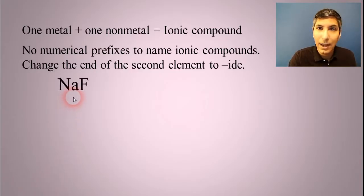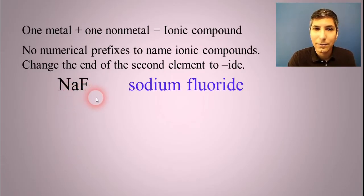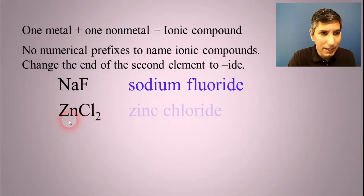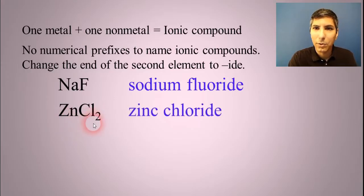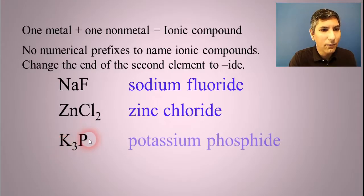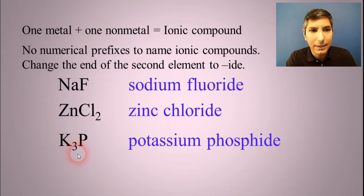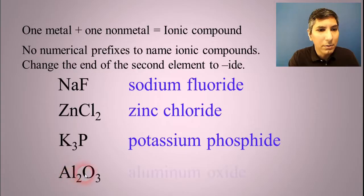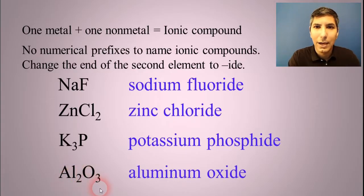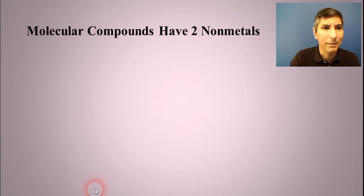...then name the second element and change the ending of the second element to IDE. So for example, if we were to have NaF, that's just sodium fluoride or ZnCl2, it's just zinc chloride. As long as it's straightforward like this, these binary compounds are fairly simple to name. K3P, potassium phosphide. Notice we don't do anything with that three. We don't say tripotassium or anything like that. It's just potassium phosphide. Same thing here, aluminum oxide. Name the first element, name the second element.